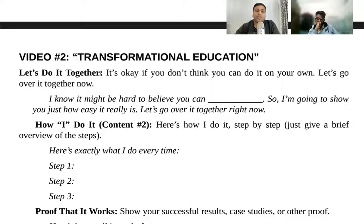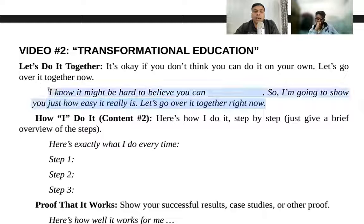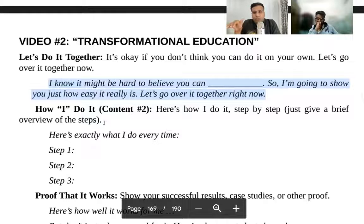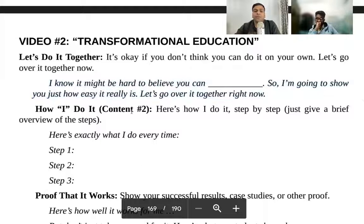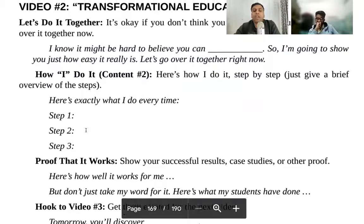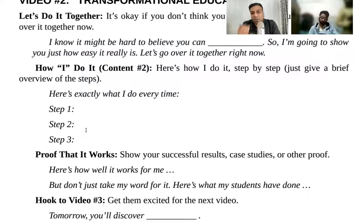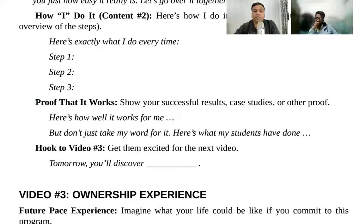In day two, you address doubts: 'I know it might be hard to believe you can achieve this — you can make so much money, speed-read books, finish every book in 10 minutes.' Then you provide your content step by step: 'Here's how I do it — step one, step two, step three.' You walk them through the process together, structuring your concept clearly.